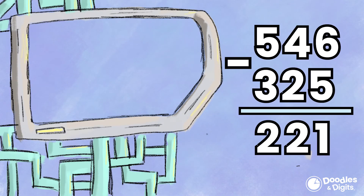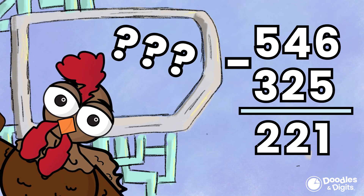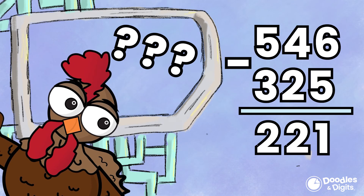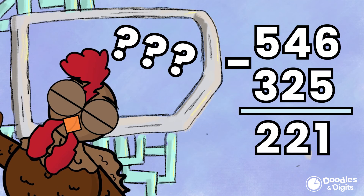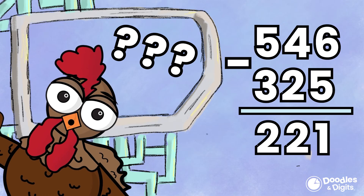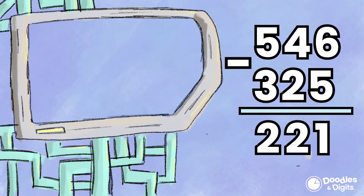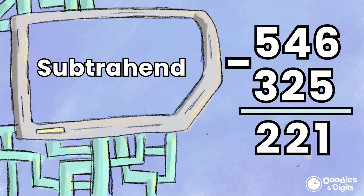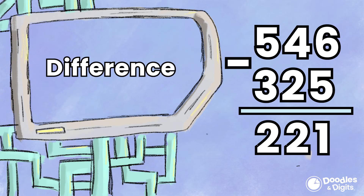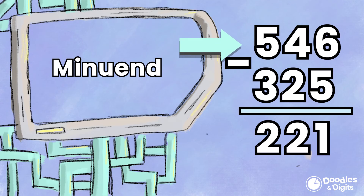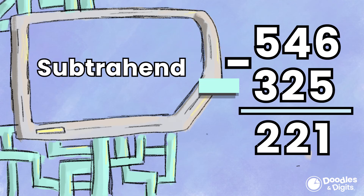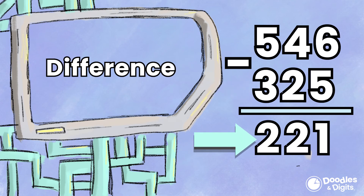What were all those fancy terms? Quick review — there are three main parts to a subtraction problem: the minuend, the subtrahend, and the difference. The minuend will be the top number, the subtrahend is what you will be subtracting, and the difference is the answer.